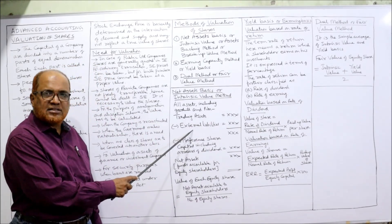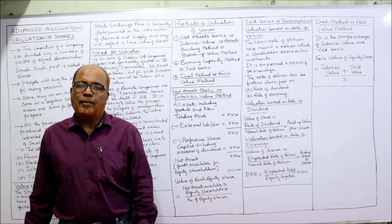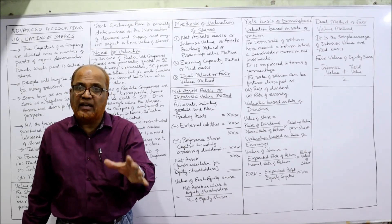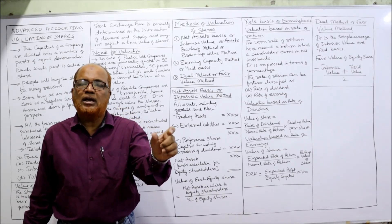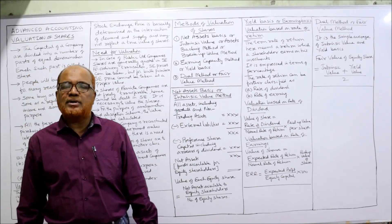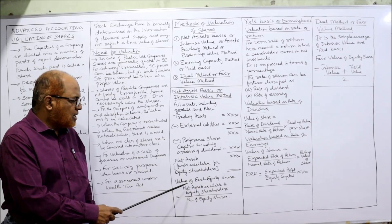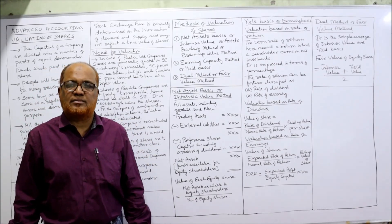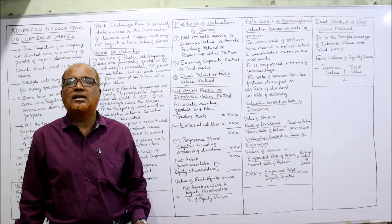From the total assets, deduct all external liabilities — sundry creditors, bills payable, provision for taxation, outstanding expenses, bank overdraft, and bank loans. Then deduct the preference share capital and any arrears of preference dividend. The remaining fund is called net assets, or the amount available for equity shareholders. Value of each equity share = Net assets available to equity shareholders ÷ Number of equity shares. This is the intrinsic value under the net assets method.